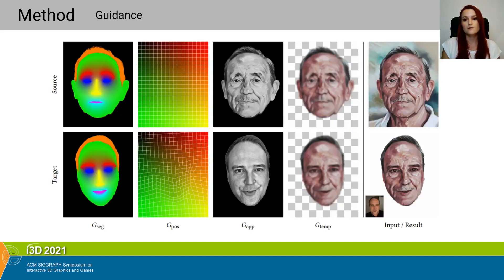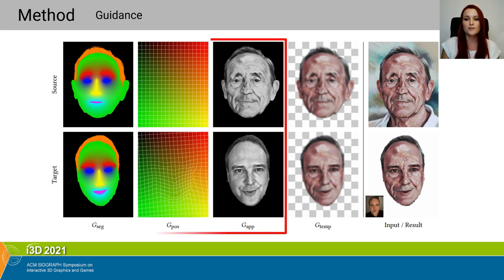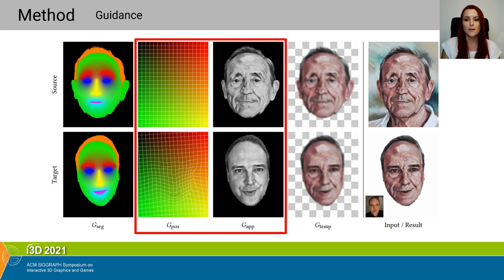In Fisher et al.'s approach, four guiding channels are used to drive the synthesis, and their computation takes tens of seconds on a desktop. We reduce this guidance to positional and appearance guides that are essential for semantically meaningful style transfer and identity preservation. We also propose how to change the computation of these two channels to generate them on the fly and achieve real-time style transfer.